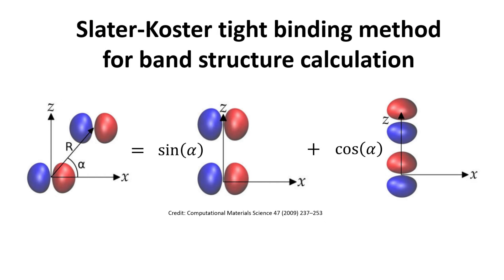Hello and welcome back. In previous videos, we established that the plane wave-like Bloch states can be written as a linear combination of localized atomic orbitals. In this video, we will show how one can construct the full Hamiltonian in the Bloch basis through a simple description in terms of localized orbitals, known as the Slater-Koster tight-binding method. This video introduces a practical method for calculating the band structure of any crystalline solid from very simple basic rules. Let's get started.